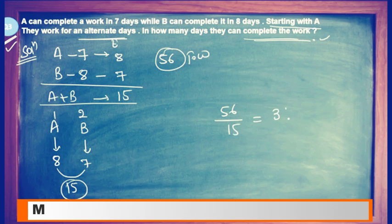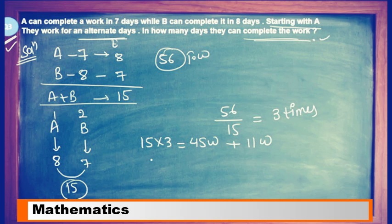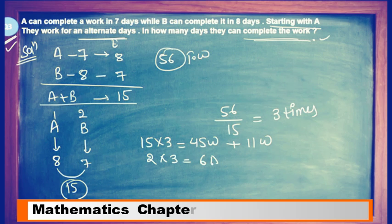You will get 3 complete cycles. That means 15 × 3 = 45 work will be completed. Plus there is remaining work of 11 units. Total days so far: since each cycle is 2 days and there are 3 cycles, that is 2 × 3 = 6 days.